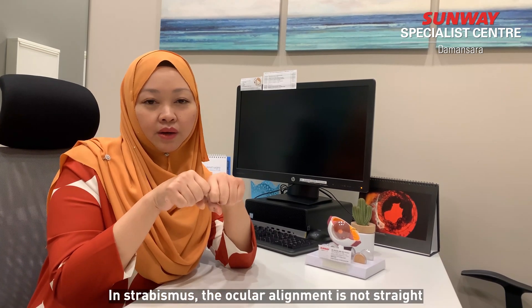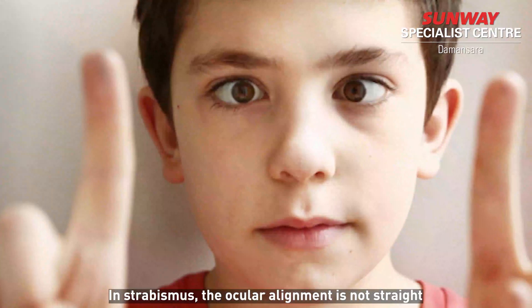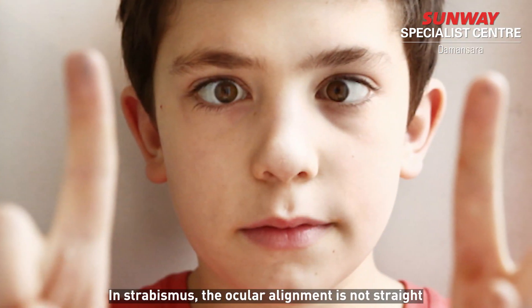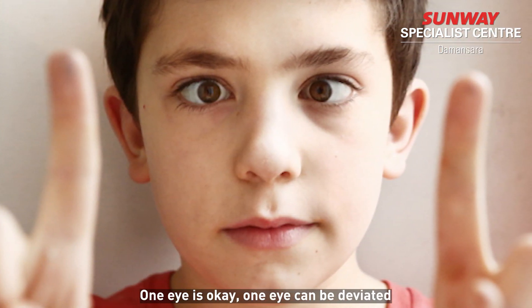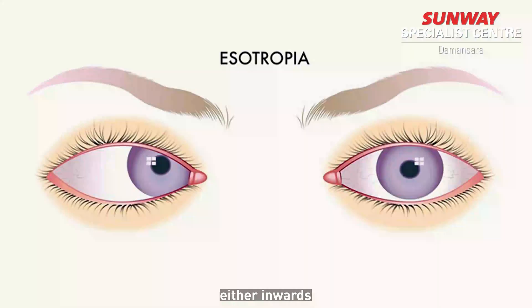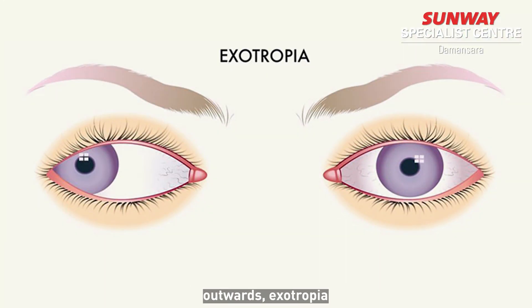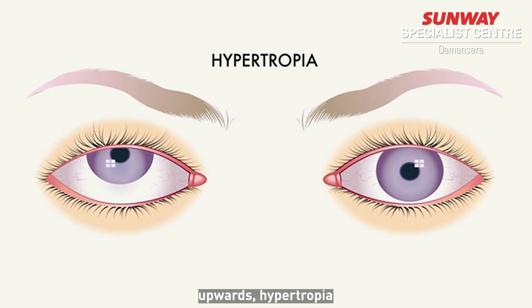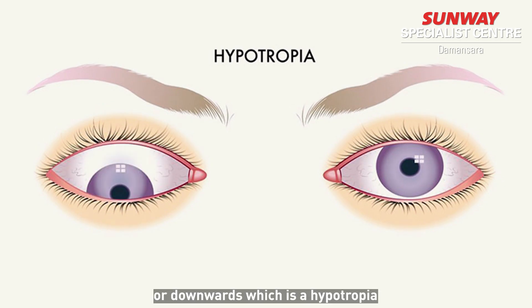In strabismus, the ocular alignment is not straight. One eye can be deviated either inwards — what we term as esotropia — outwards — exotropia — upwards — hypertropia — or downwards — which is hypotropia.